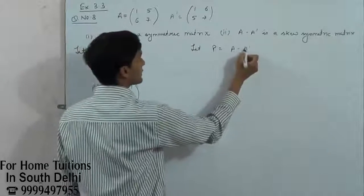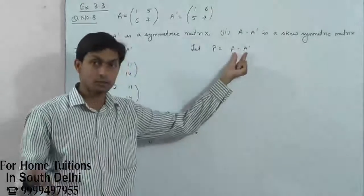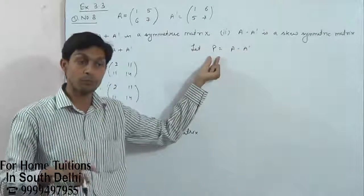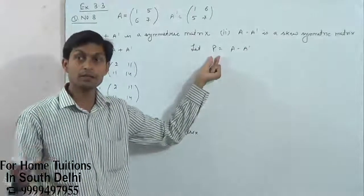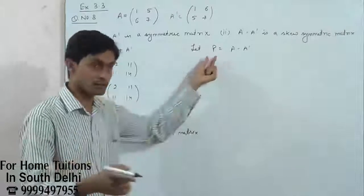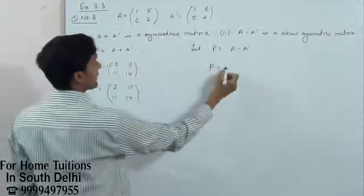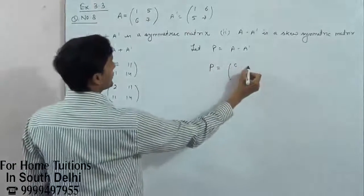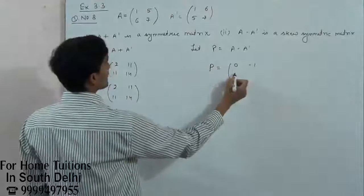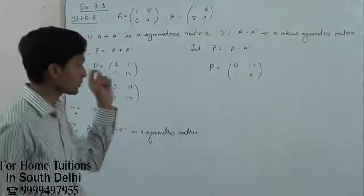So let P equals A minus A dash. Again, we have to prove A minus A dash is skew-symmetric. That means we have to prove P is skew-symmetric. And P will be skew-symmetric if P dash equals minus P. So P equals A minus A dash gives us: zero, minus one, one, zero.